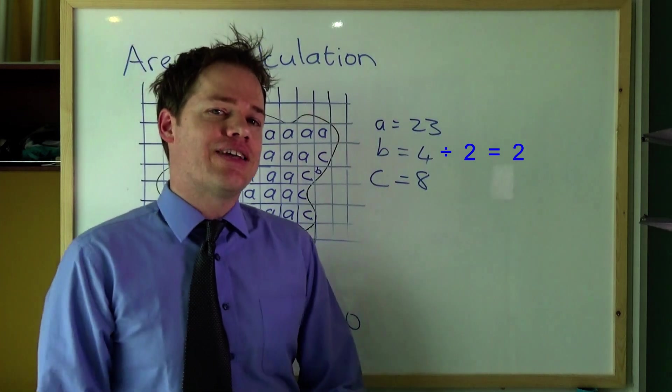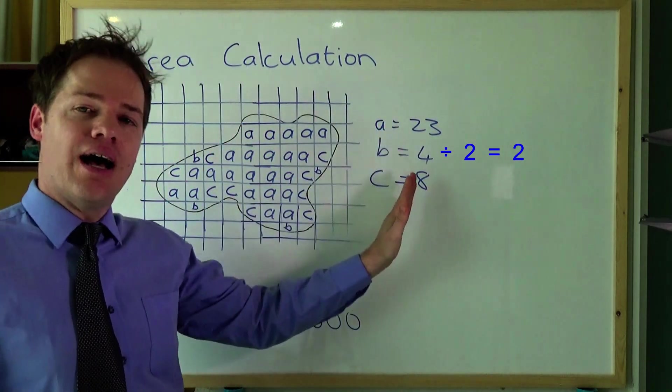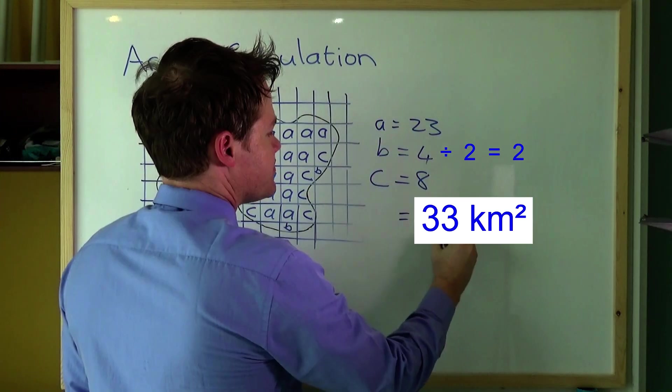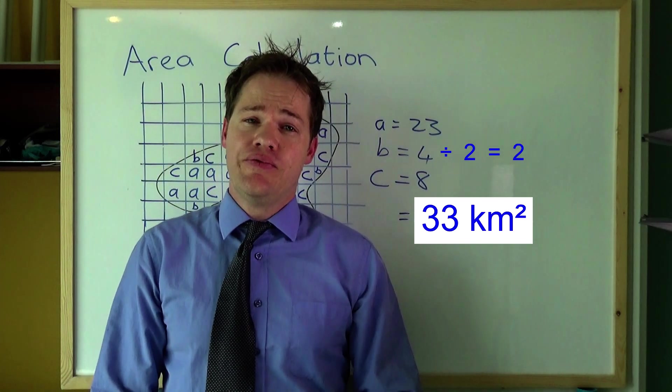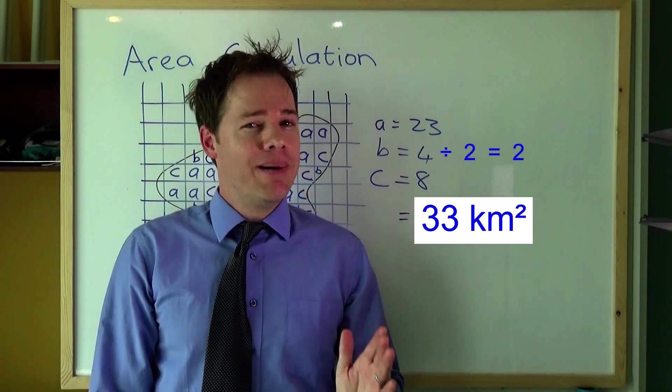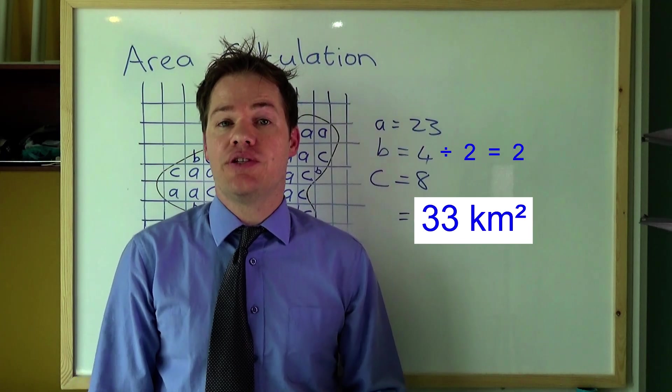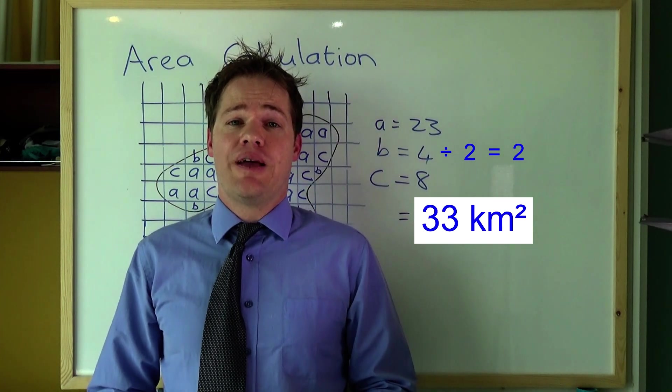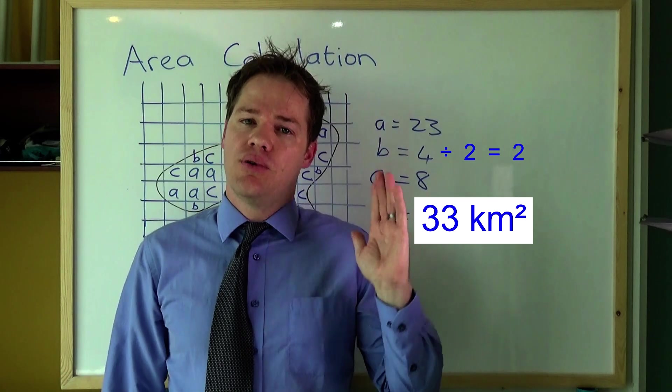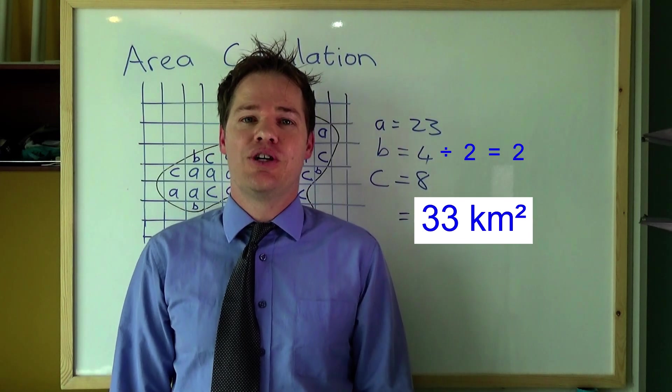So what you do next is this. You simply add up all these numbers here. Obviously it's not very very precise but this is how it's done. So I hope that makes sense and feel free to watch all my other videos on Mapwork. See you next time. Goodbye.